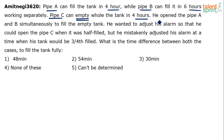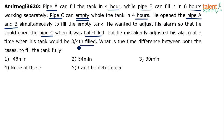He opened pipe A and pipe B simultaneously to fill that empty tank — pipe C has not come into picture yet, only A and B have been opened. He wanted to adjust his alarm so that he could open pipe C when the tank was half filled, but he mistakenly adjusted his alarm for when the tank would be three-fourths filled. So his intent was to open pipe C at half full, but by mistake he set the alarm to run pipe C only after the tank was three-fourths filled.